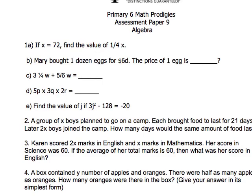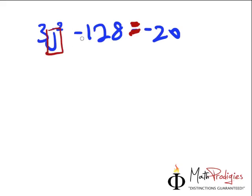Let's move on to part E, the final part of this question. Find the value of J if 3J squared minus 128 equals to minus 20. This is a little bit challenging for some of you, but if you know the basics of algebra, you will know how to do this. First off, the very important thing is you must understand what the game is. When you have an equal sign in between, they want you to find out what the value of the variable is. In other words, they want to ask you, what is J? What does J equal to?